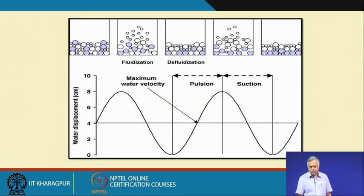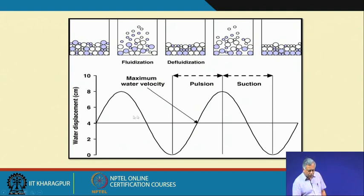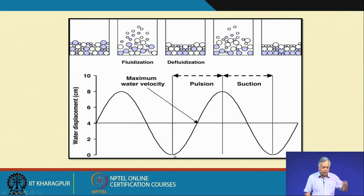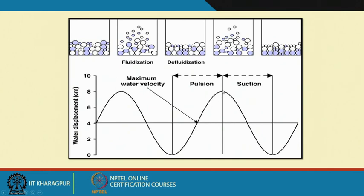To show how pulsation and suction strokes look: it is like sinusoidal motion. During the pulsation stroke you press the fluid upward; during the suction stroke you withdraw it so the fluid tries to go down. That is one complete cycle — from the start of pulsation to the end of suction. The time to complete one cycle is called the cycling time. Water velocity is maximum at the peak of the pulsation.